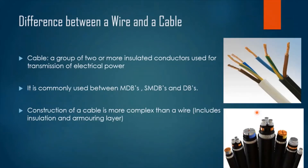On the other hand, a cable is a group of two or more insulated conductors used for transmission of electrical power. These cables are commonly used between transformers, main and sub-distribution boards, and also for higher load equipment. Compared to a wire, a cable has more protective layers and is used for higher loads.